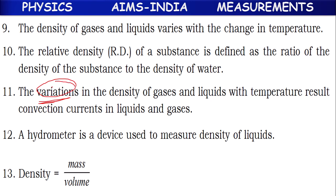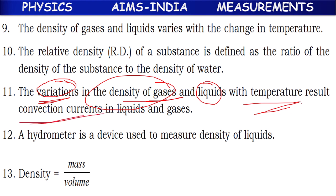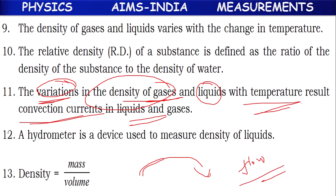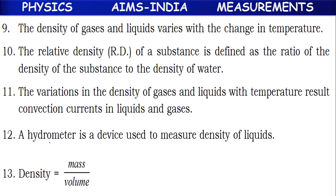Changes in density of gases and liquids with temperature result in convection currents in liquids and gases. When density varies, flow of gases or liquids from one place to another happens based on conditions — these are called convection currents. A hydrometer is a device used to measure the density of liquids.